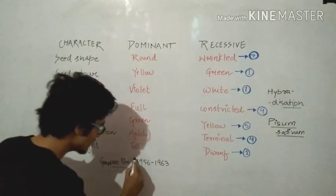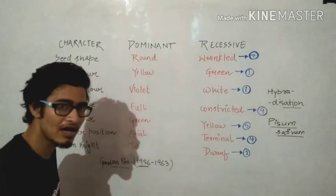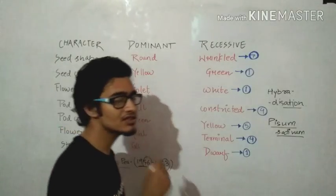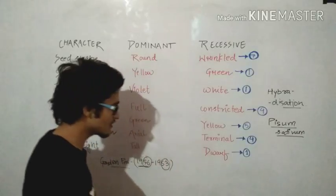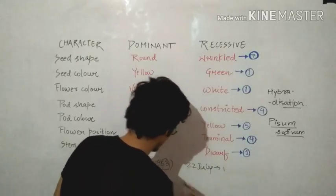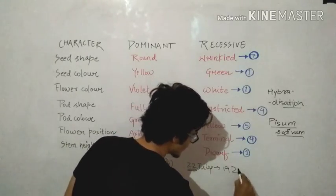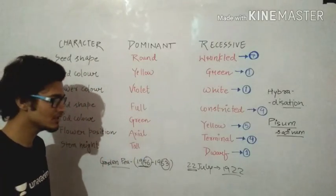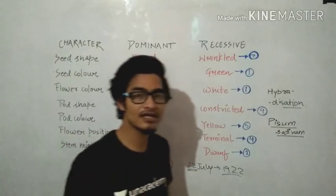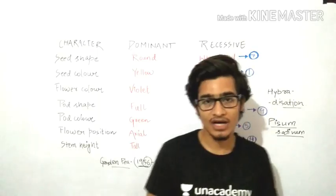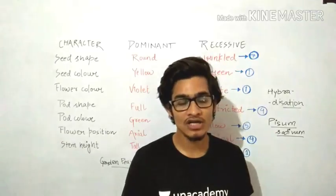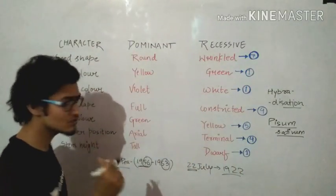He has taken garden pea as the plant on which he wanted to work, and he has worked for seven long years. What are those seven long years? 1856 to 1863. This data is very important. What is the date of birth of Mendel? 22nd of July, 1822.